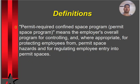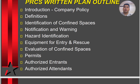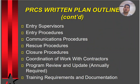Permit-required confined space program means the employer's overall program to maintain hazard and risk control inside confined spaces where no work is allowed without a permit. A written confined space plan should include: introduction and policy; definitions; identification of confined spaces; notification and warning; hazard identification; equipment for entry and rescue; evaluation of confined spaces; permits; authorized entrants and attendants; entry supervisors; entry procedures; communication procedures; rescue procedures; closure procedures; coordination of work with contractors; program review and date; and training requirements and documentation.